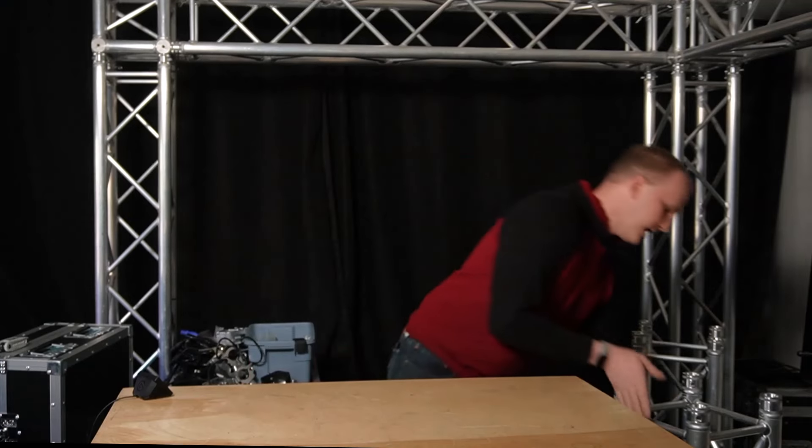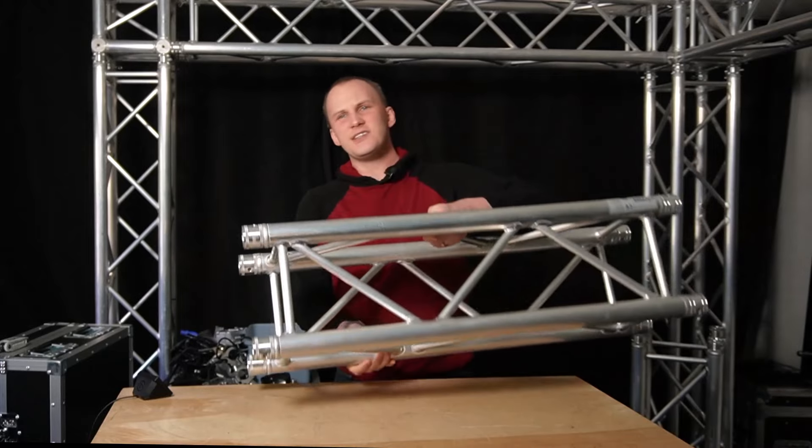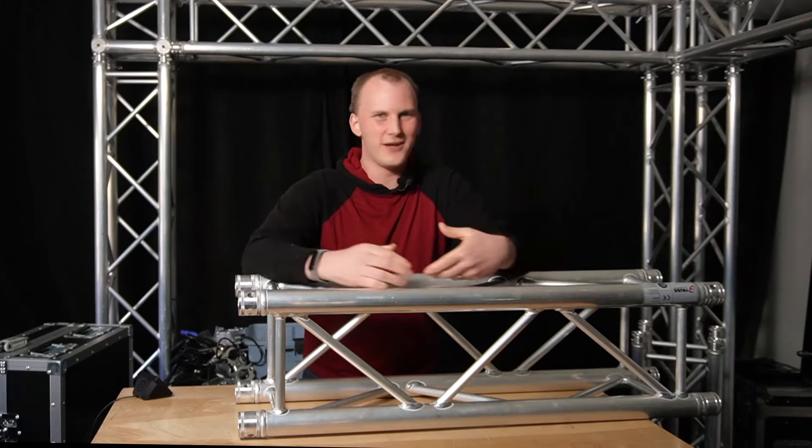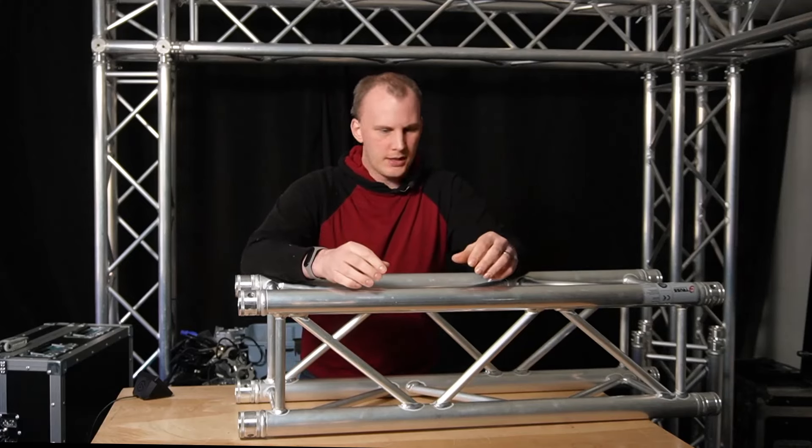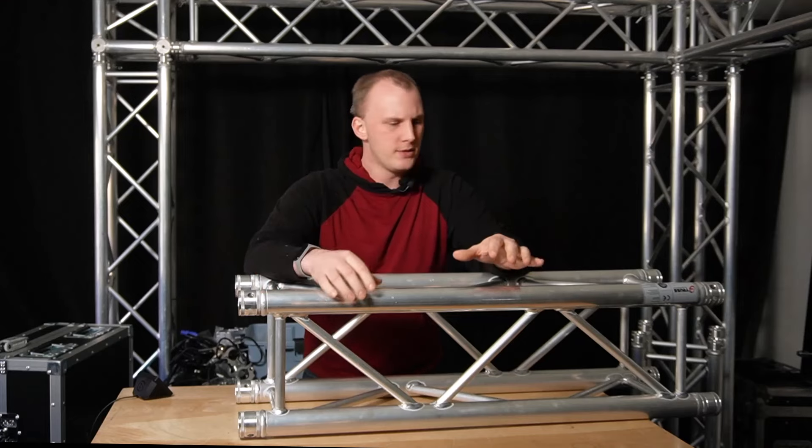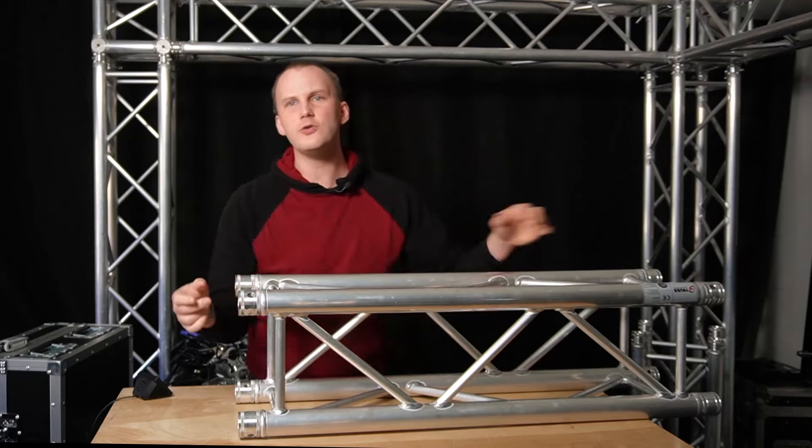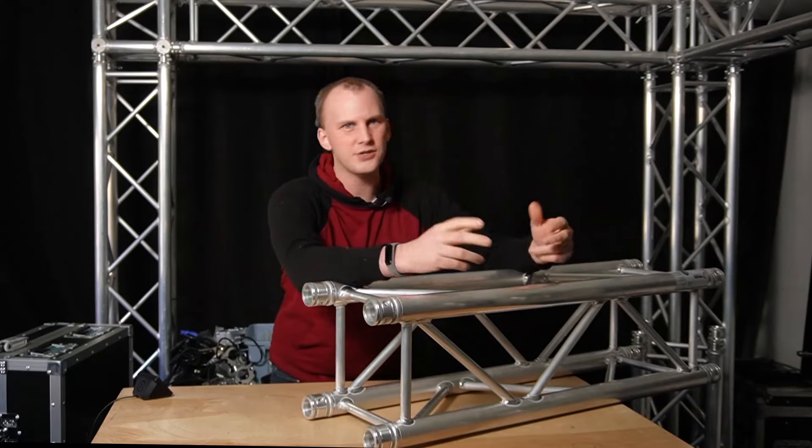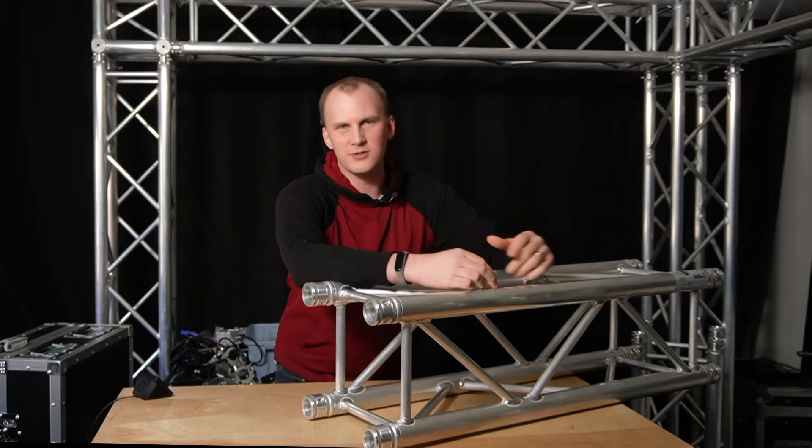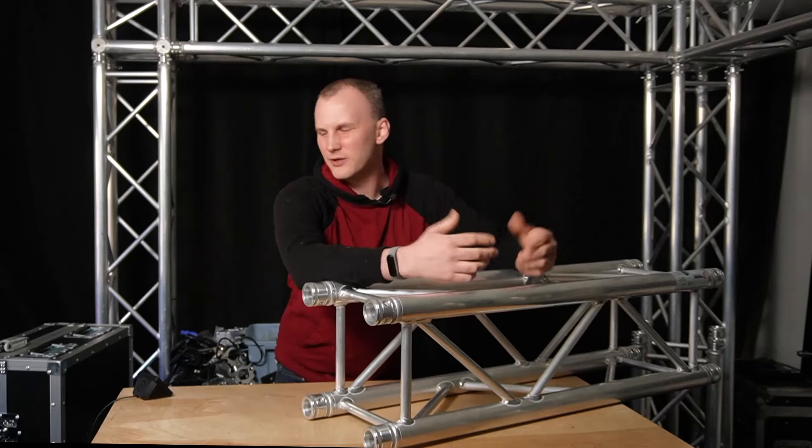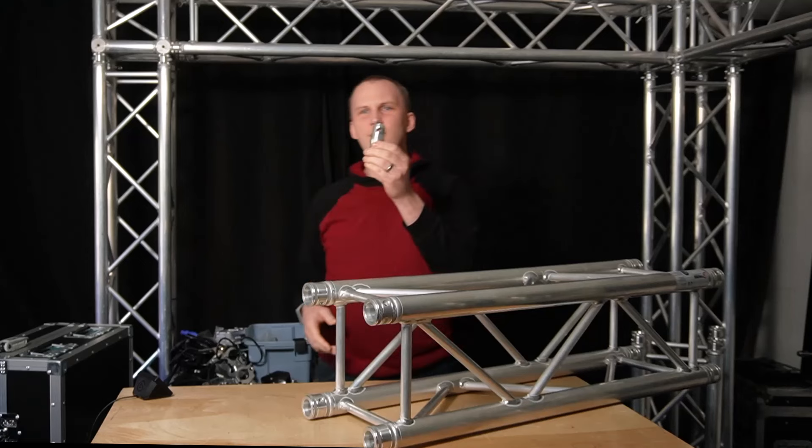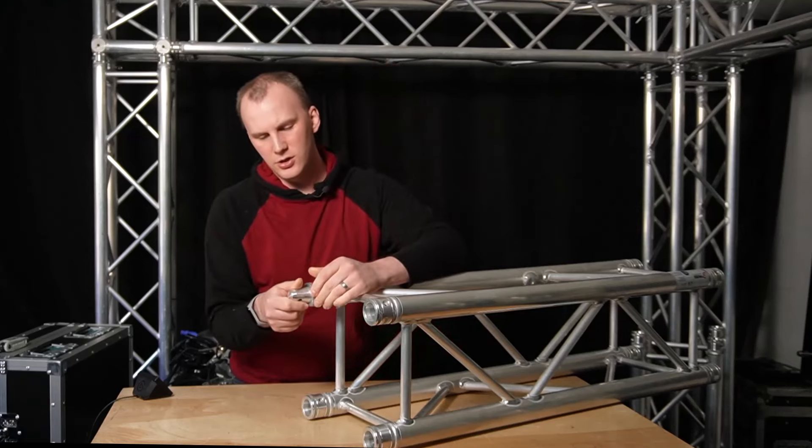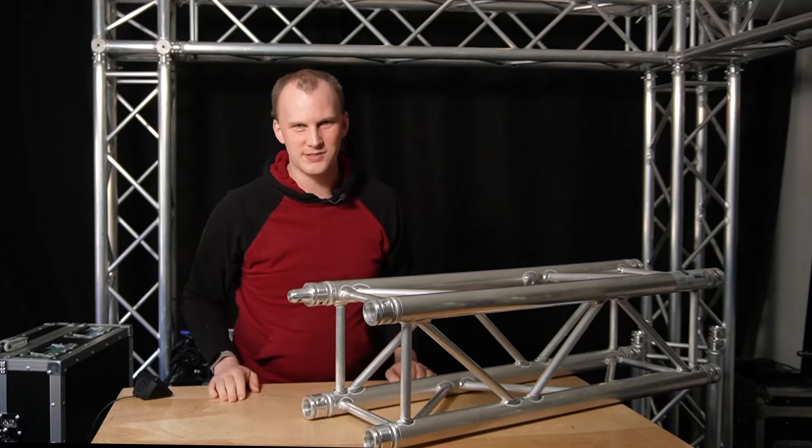So the anatomy of a typical DJ style truss that we see, and this could be global truss, gamma truss, truss from Chauvet, many brands, is a spigoted type truss. It has in the end here holes, and the standard size, the standard square truss, is called 290 truss. It's 290 millimeter square, about 11 inches, and you've got holes in the end and you've got what we often call footballs, these guys, that then would insert into the holes so that you can attach two pieces together.